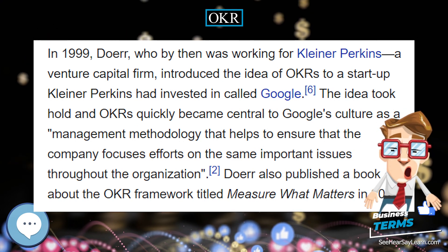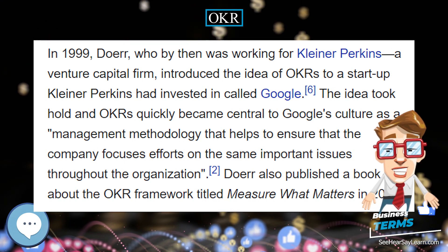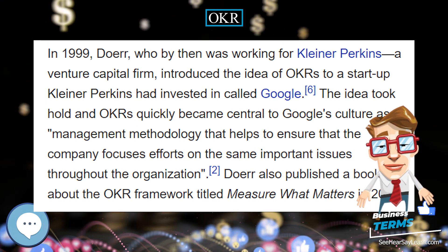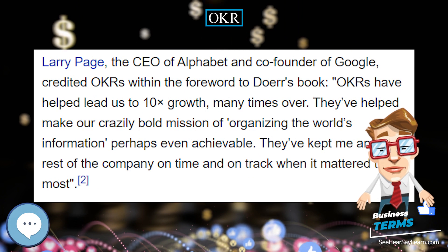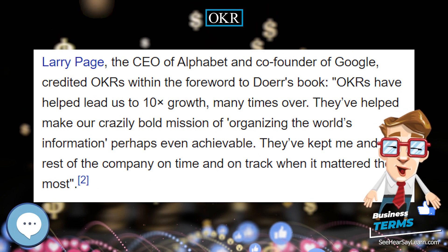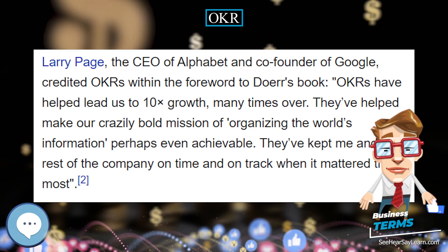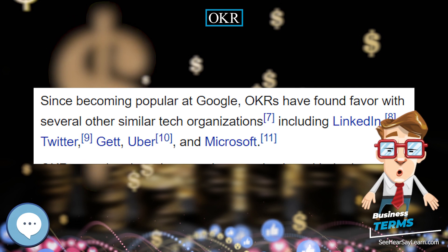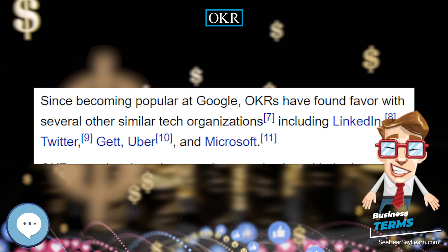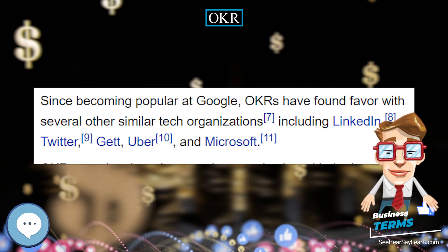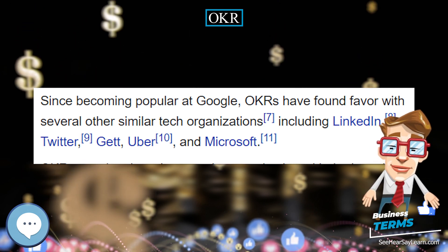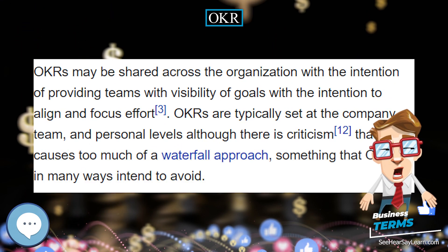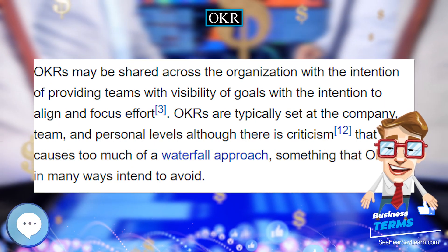Grove's simple but effective concept is explained by John Doerr: the key result has to be measurable. But at the end you can look, and without any arguments, did I do that or did I not do it? Yes? No? Simple. No judgments in it.